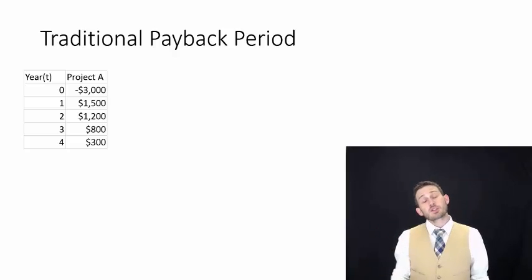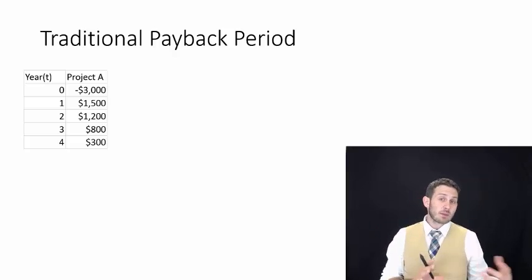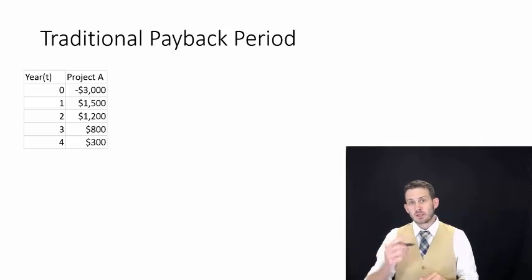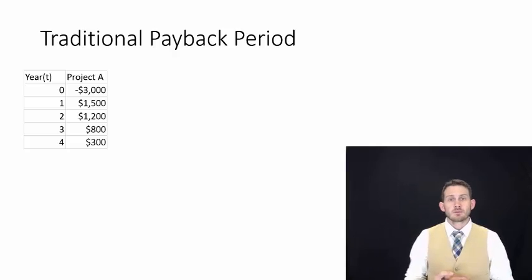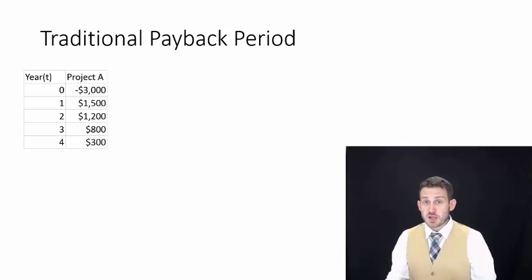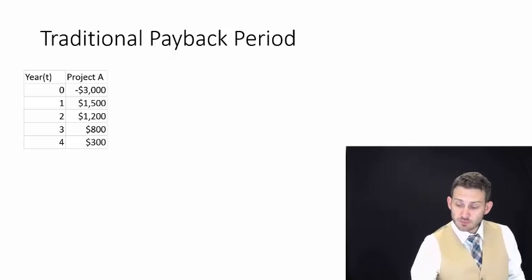Looking at the traditional payback period, we're going to split it down to a single project — Project A — which has the following cash flow characteristics. We're going to see exactly how long it's going to take to achieve this payback. We have a $3,000 investment.